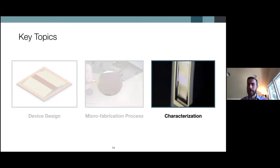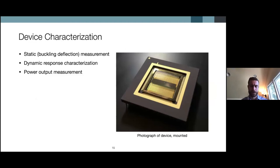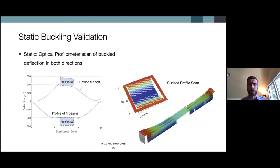Now in terms of characterization — how we evaluate the device — this is a photograph of the finished unreleased device. We were able to take static measurements evaluating the geometry of the device structurally, get a dynamic response when it's in operation, and then measure the power output to identify rooms for improvement. Statically, we measured with an optical profilometer the buckle deflection, which was precisely 200 micrometers. You can see a 3D scan of the beams — three beam selections on the far right — and a complete 3D scan of the device showing the buckle deflection.